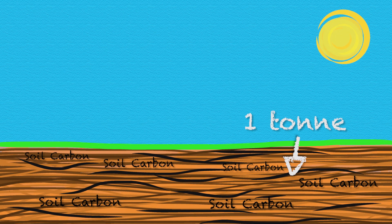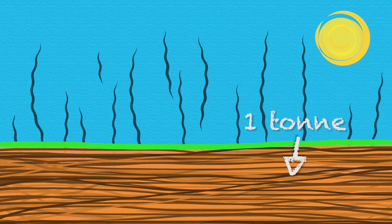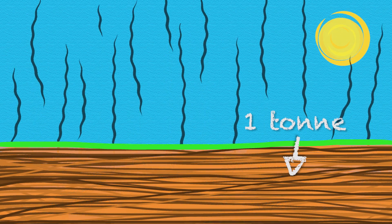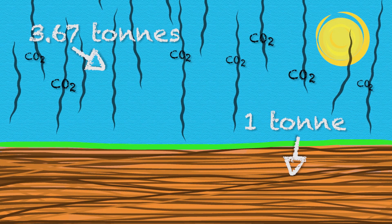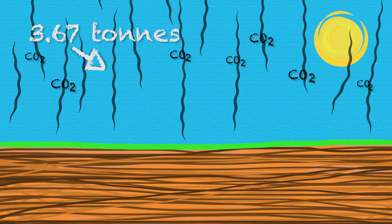But in reverse, every tonne of soil carbon lost from our soils will emit the equivalent of 3.67 tonnes of CO2 back into our atmosphere. So it's important that we look after our soil carbon and better understand it. Let's look at it more closely.